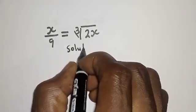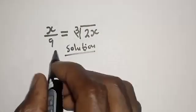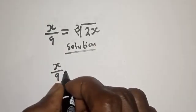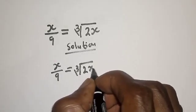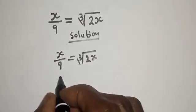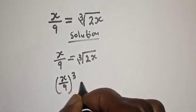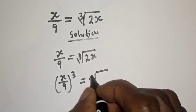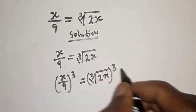Solution. We have x over 9 is equal to the cube root of 2x. Now, let's raise both sides to the power of 3. That is, x over 9 to the power of 3 is equal to the cube root of 2x to the power of 3.